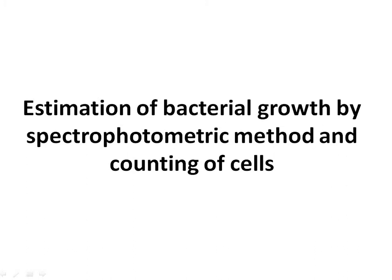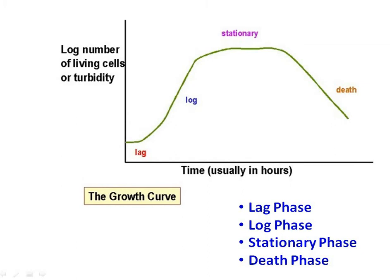Unicellular bacteria divide typically by binary fission, in which a cell grows into twice its size and then divides into two identical daughter cells. Each of these cells grows in the manner of the parent cell until it too divides. The sum of all the processes occurring between cell divisions makes up the cell cycle.